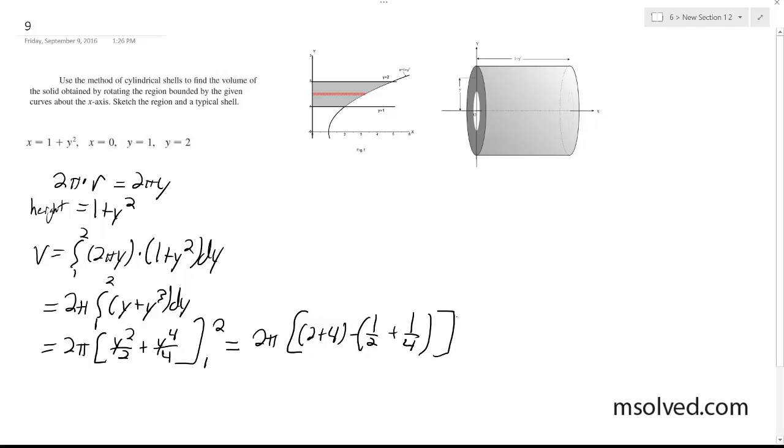And if you continue to simplify this, we get 2 pi times 6 minus 3 quarters.